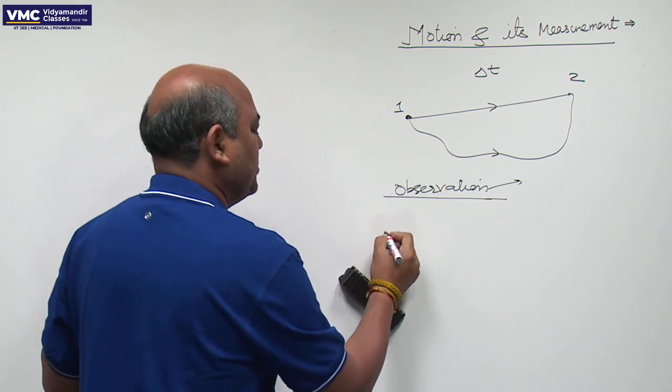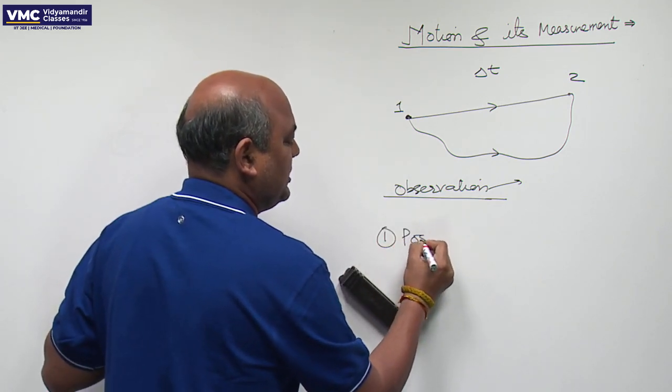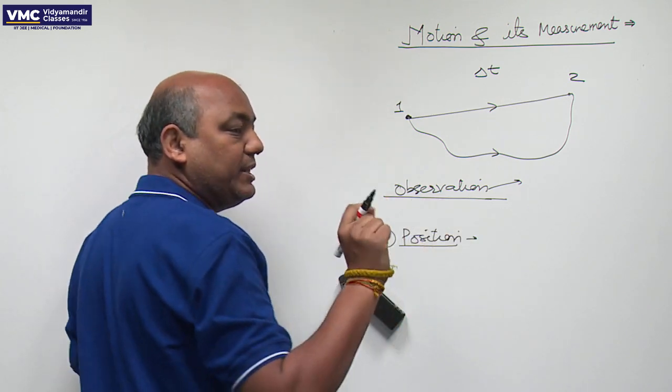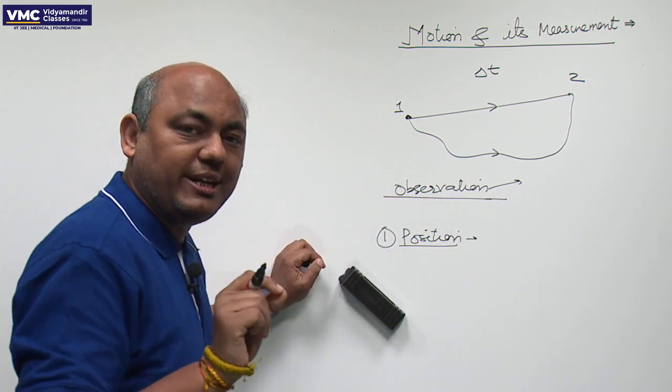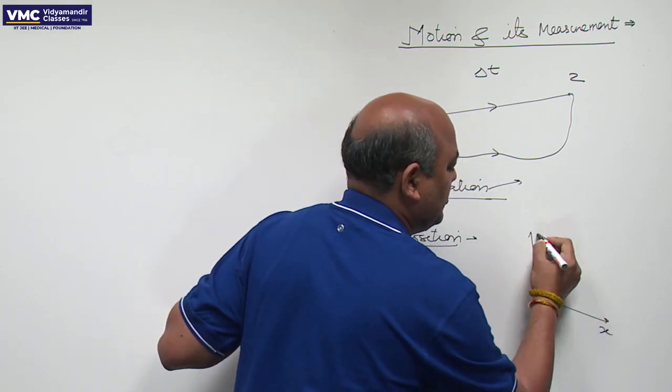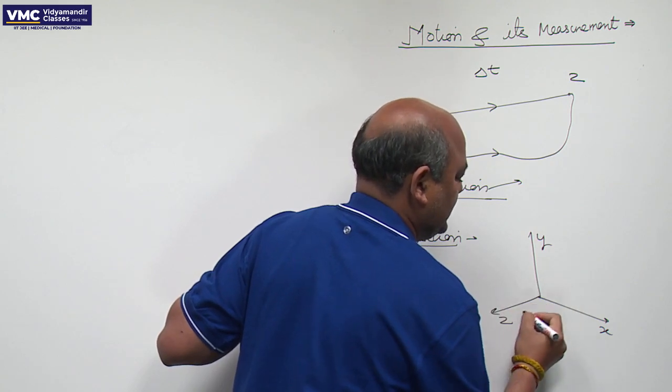We have got a few parameters. The first parameter is your position. The first parameter is position. Of course, the location of the particular body at a particular time. And this is the coordinate axis. And this is the origin.